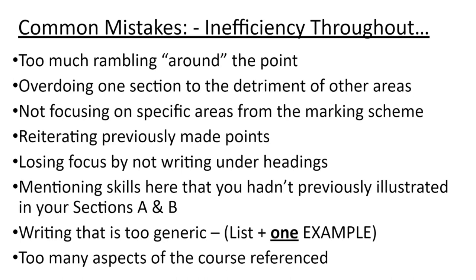Another issue is that people magically introduce information in section C that they haven't referred to already. You want a through line throughout your project — ideas introduced in section A should be discussed and acted on in section B, and then thought about in section C. So don't introduce a brand new idea or event that you haven't mentioned previously. Also avoid being too generic — don't just give a list of skills; give three or four skills and then one or two examples of how you improved or developed that skill in the context of your particular project.